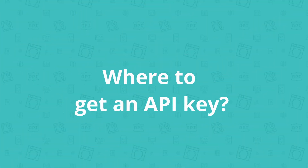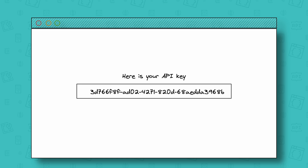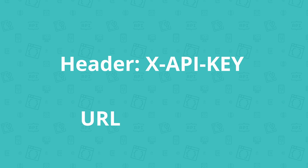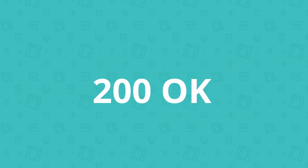Let's answer a couple more hands-on questions — for example, where to even get such an API key from. API key providers typically have a web application to manage your access to their API, and that's where you find a section to generate your API key. Then you add your API key into the header or the URL of each of your requests, and you're able to access their API.